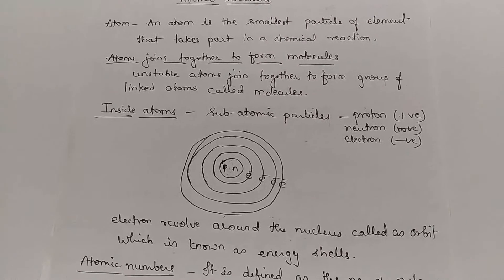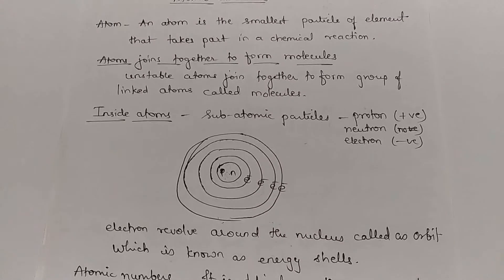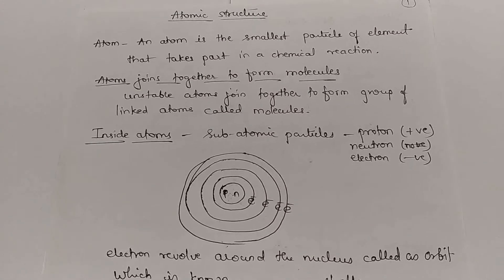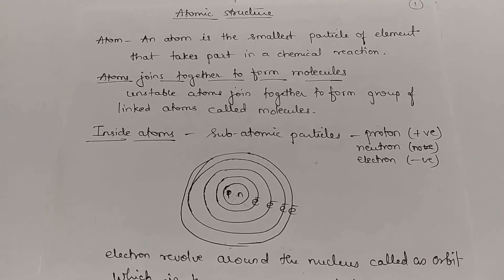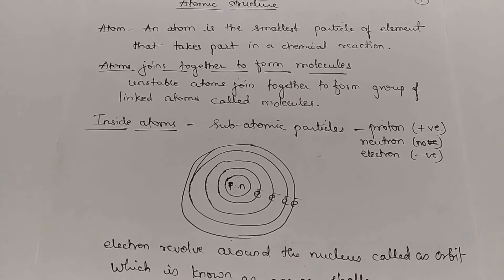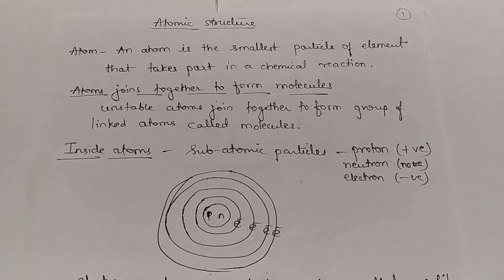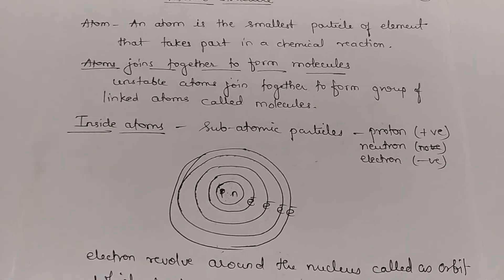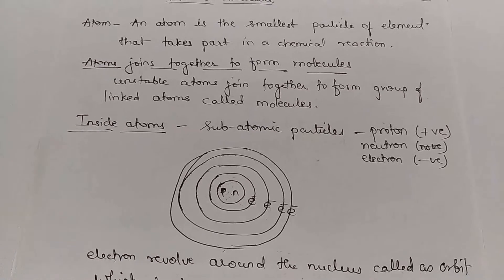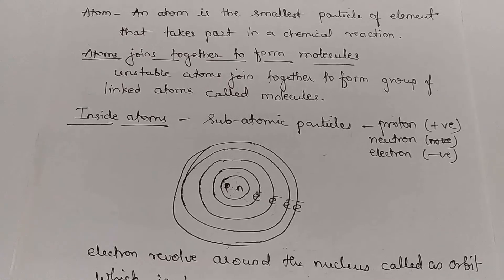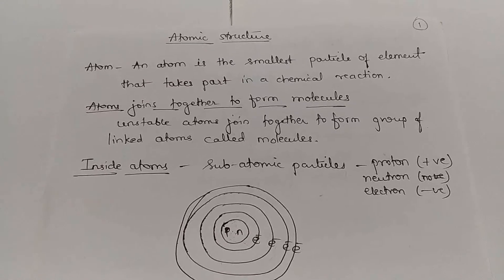After that, chemist John Dalton gave the name 'atom' to this particle — atom means a particle which is indivisible, meaning we cannot divide it further. When many atoms come together they form a molecule. Atoms do not exist in a free state independently; that's why they combine with one another to be stable. They may combine with other atoms of their own kind to form a molecule.